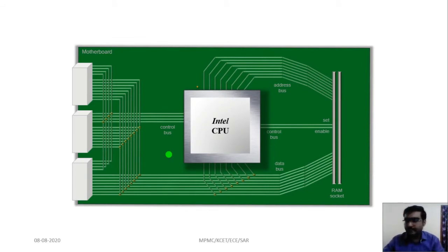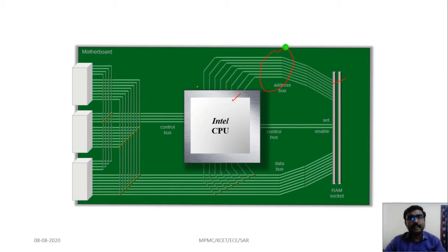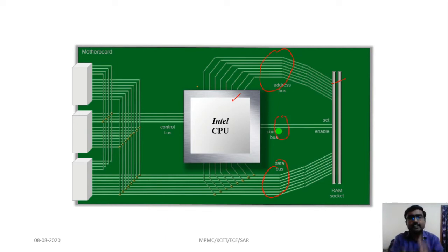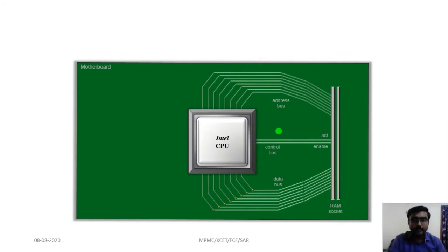On this motherboard, the address bus interfaces between the processor and the RAM — the random access memory. Each memory element in the RAM has a unique address. The data bus carries information to or from the memory and interfaces with both the microprocessor and input/output devices. The control bus establishes the controlling operation between the CPU and the RAM.